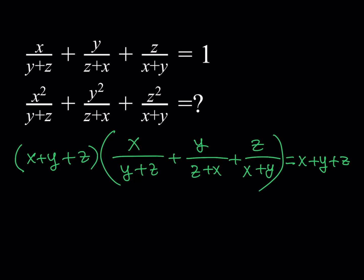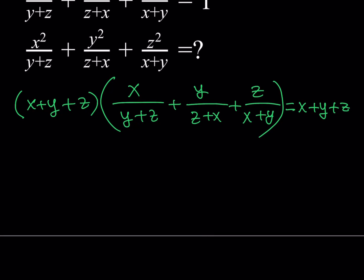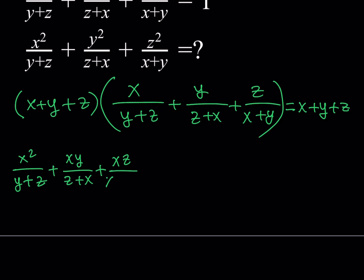Also, x+y+z should not be zero. So if we distribute (x+y+z) through the first expression, multiplying by x gives x²/(y+z) — which is what we want — plus xy/(z+x) and xz/(x+y) as extra terms. These extra terms are fine; we'll handle them.